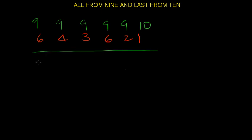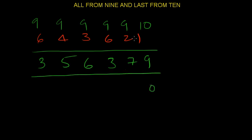What do we get? Complement of 6 would be 3, complement of 4 would be 5, complement of 3 would be 6, complement of 6 is 3, 7, and 9. This should add up to million. Let's try that, 9 and 1 is 10, and then 10, and then 10, and then 10, and 10 here, and here as well, and here as well, here as well. There we go, million. So that's our formula, all from 9 and last from 10.